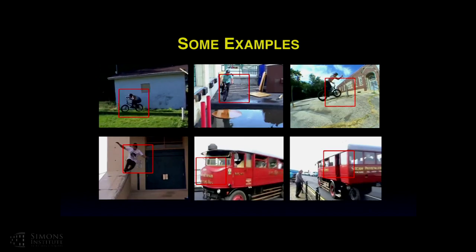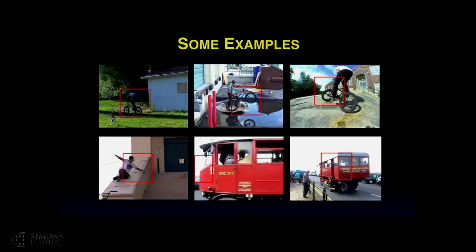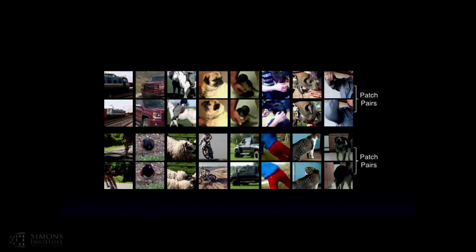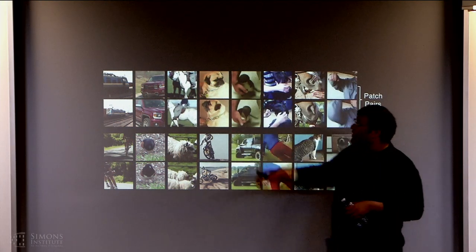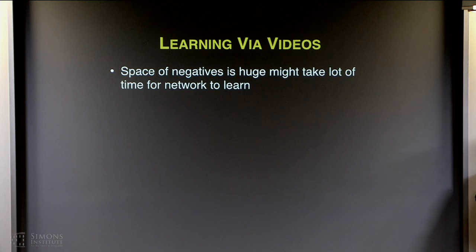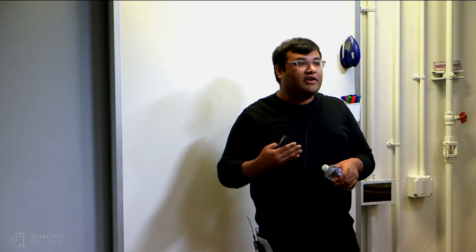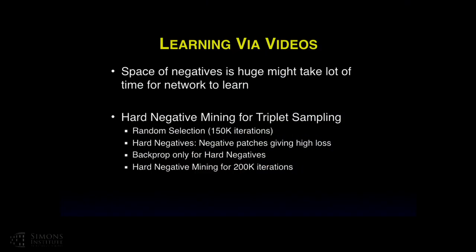Here are some example tracks — bikes changing viewpoints, deformations of bikes, and so on. The viewpoint invariance and deformation is significant: cars changing viewpoint, a pug's face deforming, a horse with changing viewpoint. For the negative sampling strategy, if you just use random patches, the network learns very slowly. So after the first 10 epochs (150,000 iterations) using random patches, we do hard negative mining — selecting from a batch only the patches with very high loss to back-propagate, running for 200,000 iterations for faster convergence.